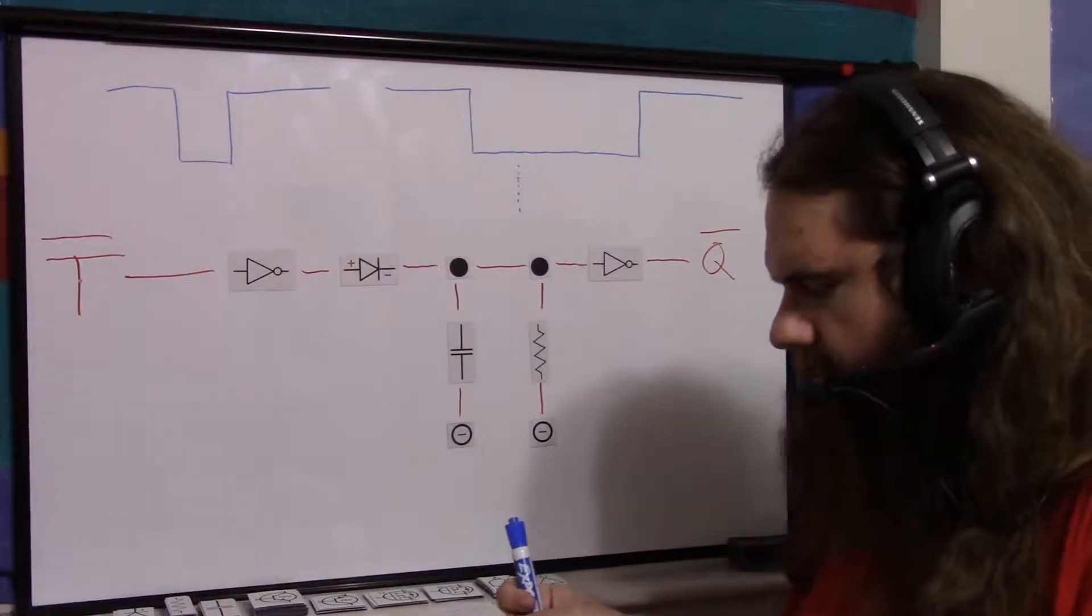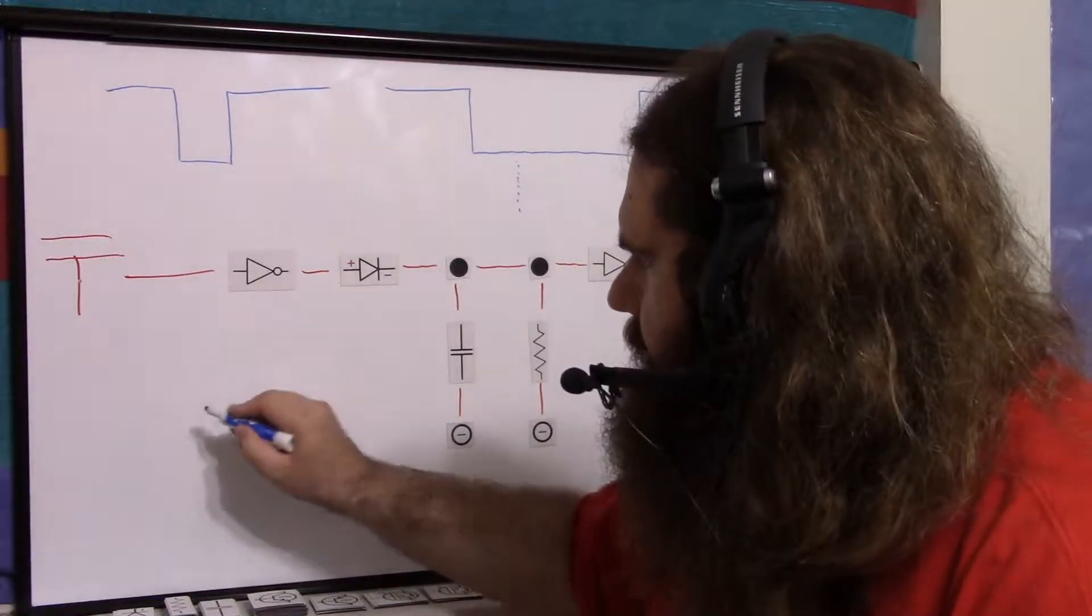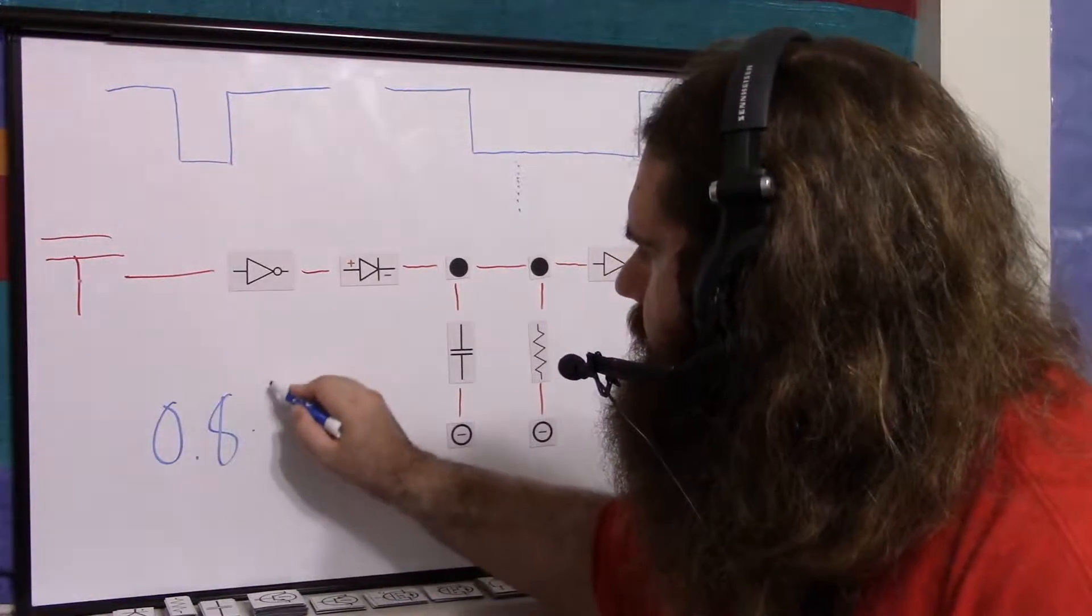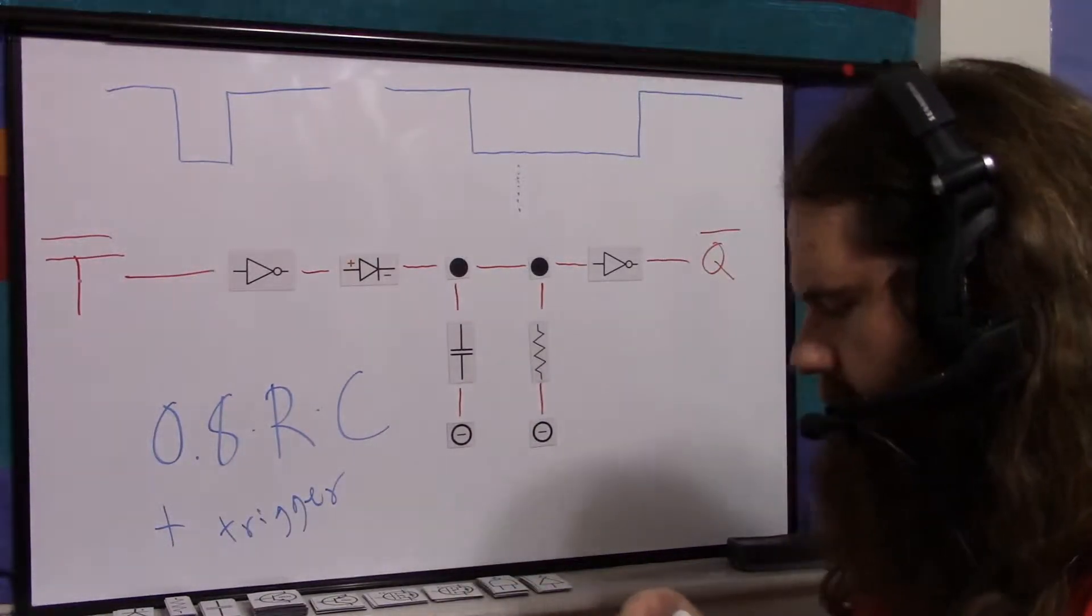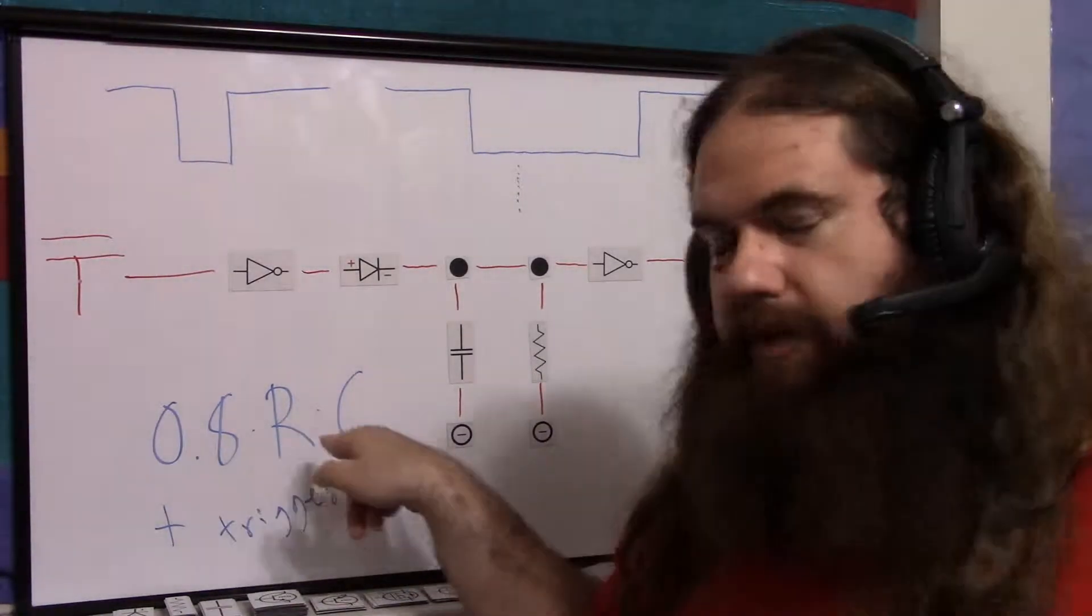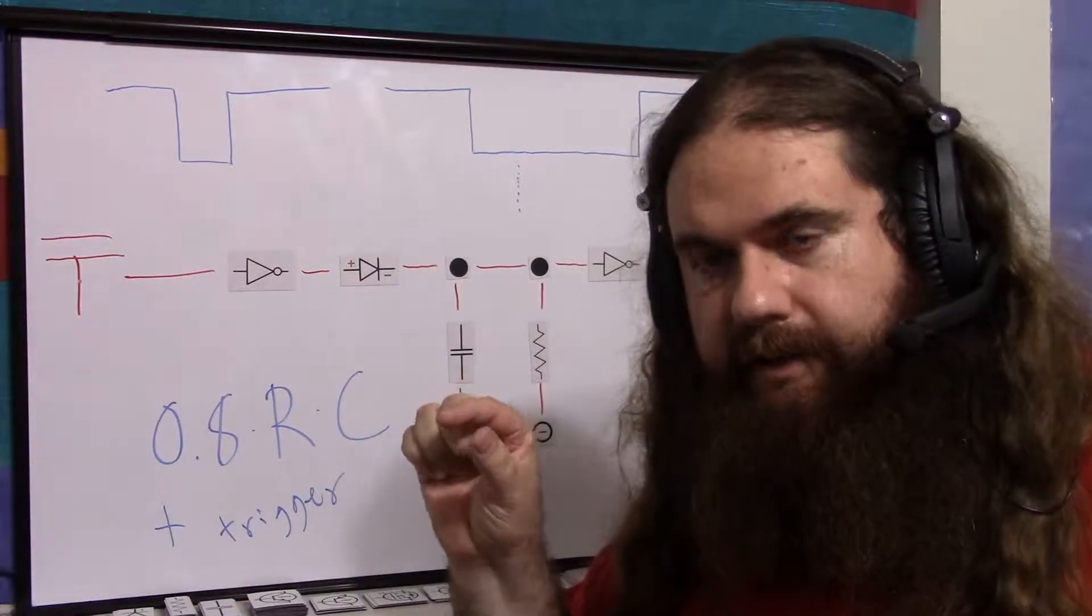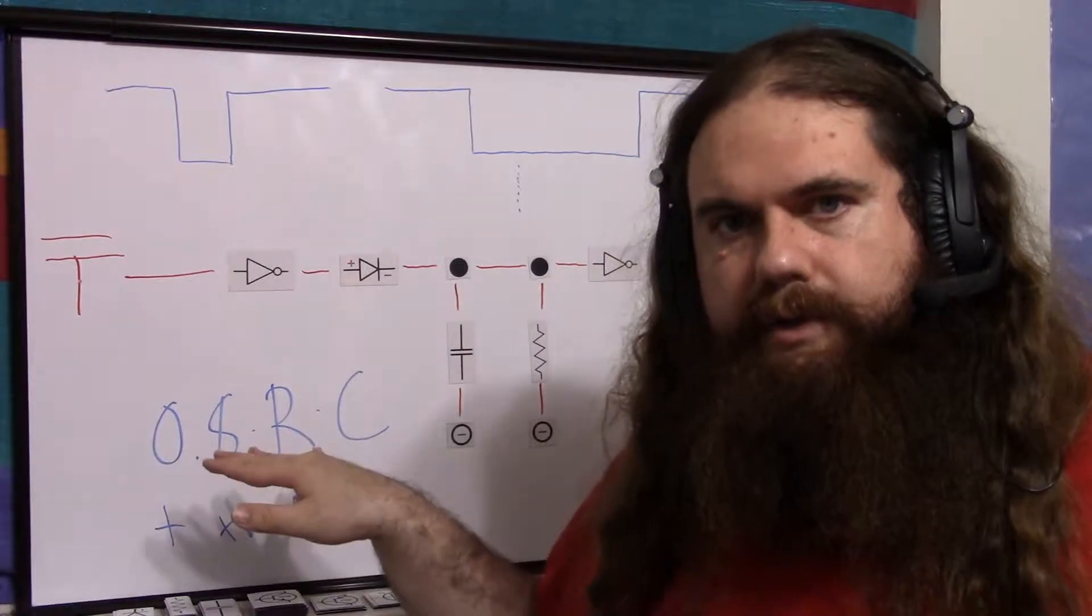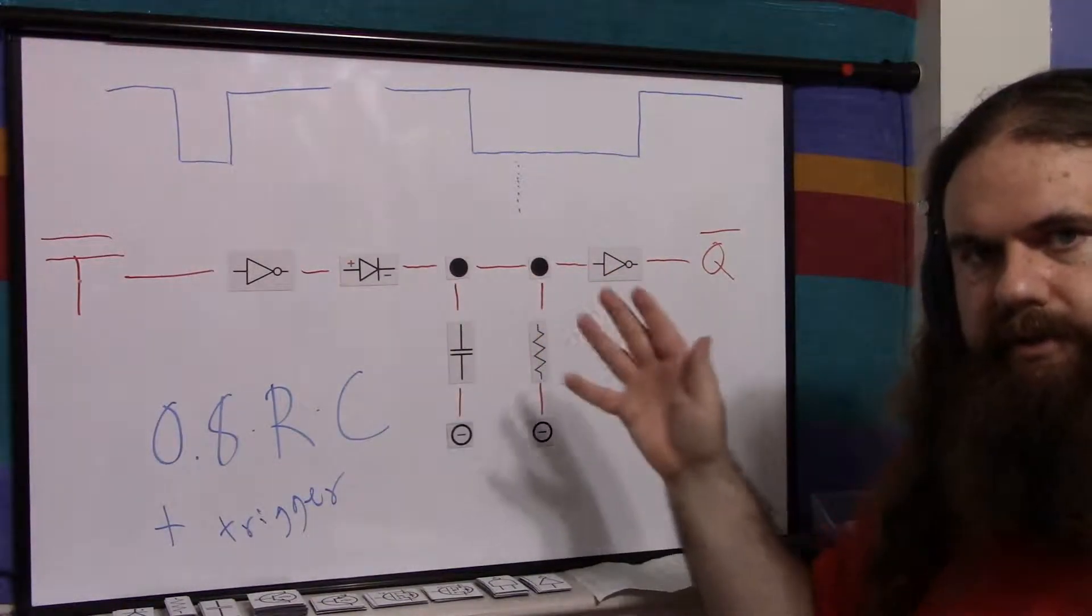And approximately, again, according to the reference I have, the duration is approximately 0.8 times R times C plus trigger, of course. So it's how long you hold it plus roughly this. You'll have to mess around with it to get the right number. Your capacitance and resistance, because we're using CMOS, there's no gate current.